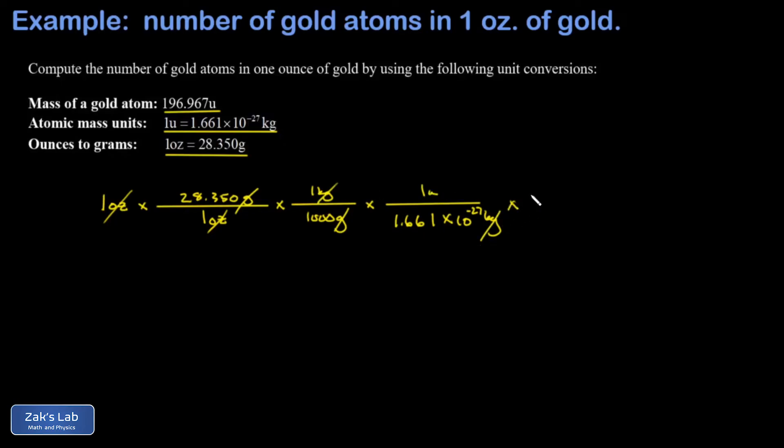Now I would have the number of atomic mass units equivalent to an ounce, and finally I put in the mass of gold in atomic mass units. So in the denominator, 196.967 atomic mass units for each gold atom, and the units of atomic mass units cancel out.